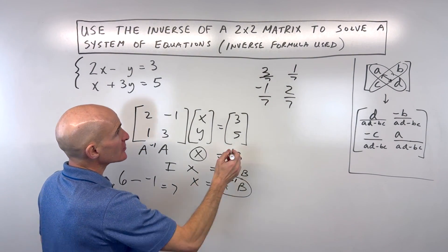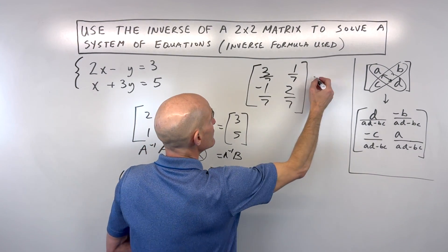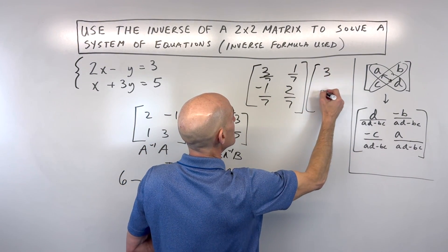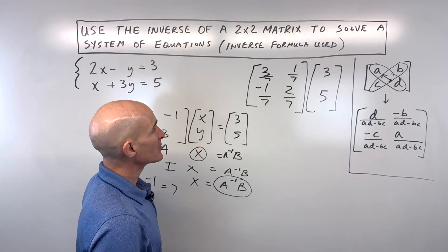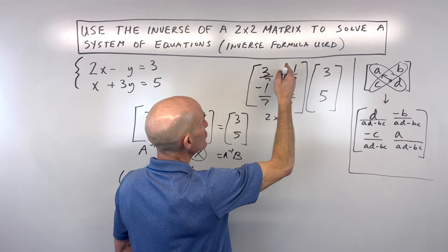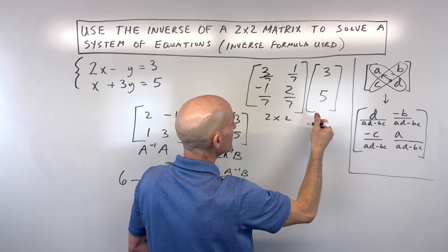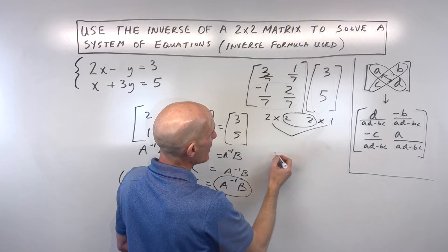We're going to multiply it by our solution matrix, which is matrix B, and that's 3, 5. Now, one thing you probably know about with working with matrices and multiplying, you want to check the dimensions. We have a 2 row, 2 column times a 2 row, 1 column. The inner dimensions match, and we're going to end up with a 2 by 1.